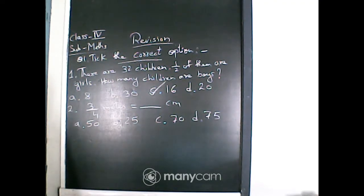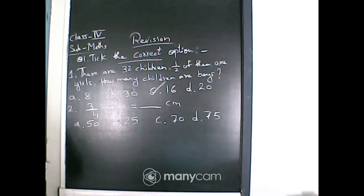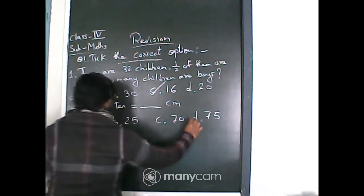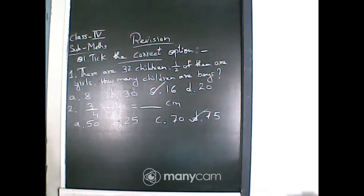First of all, 1 metre equals 100 centimetres. So 3/4 metre equals 3/4 of 100 centimetres. The answer is option D, 75 centimetres.